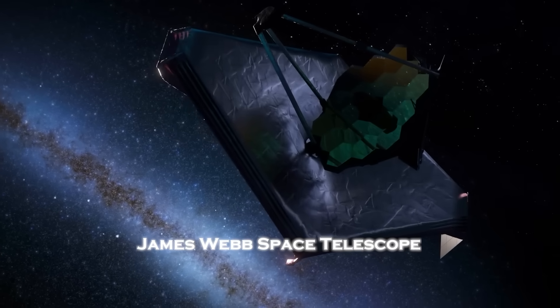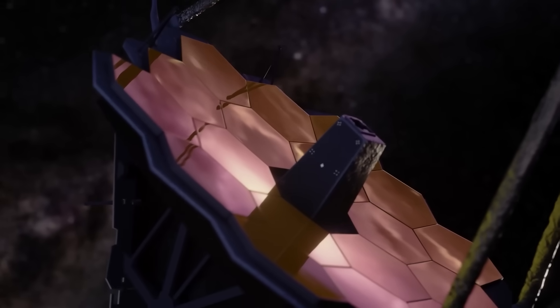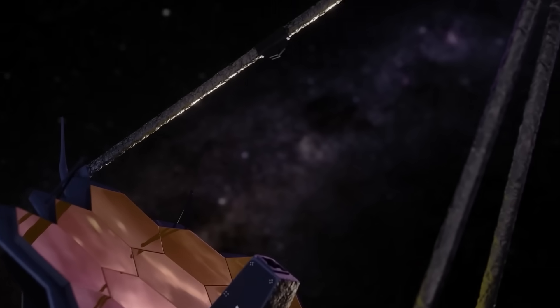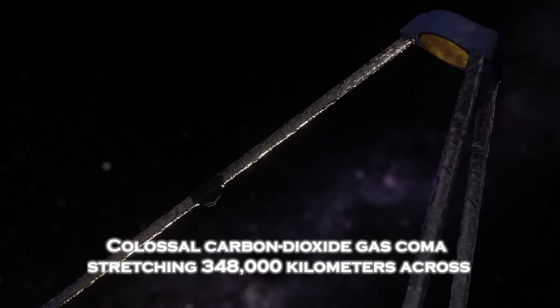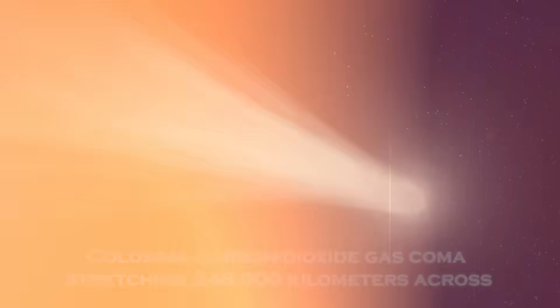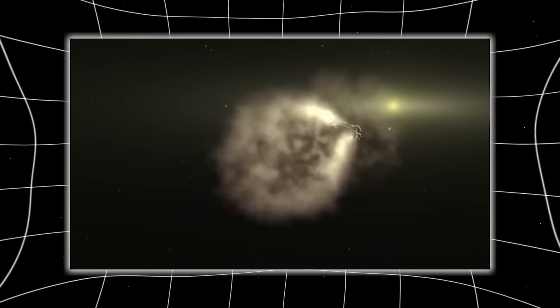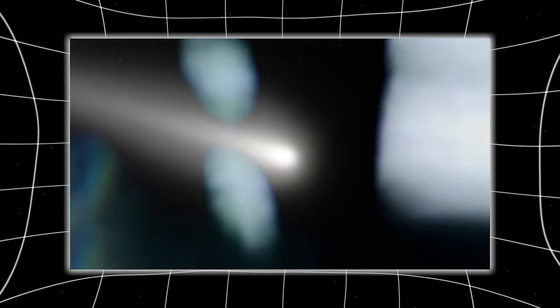But in late August, the James Webb Space Telescope captures something astonishing. Using the ultra-sensitive NIRSPEC instrument, Webb detects a colossal carbon dioxide gas coma stretching 348,000 kilometers across, almost the distance from Earth to the Moon. At this stage, it looks like a typical, though unusually active, comet.